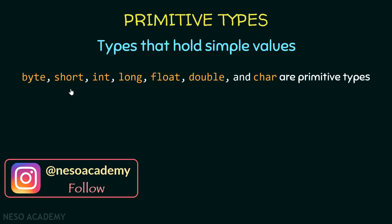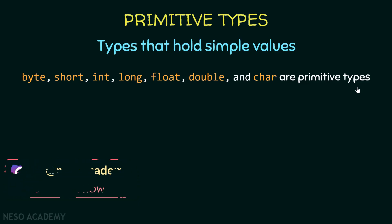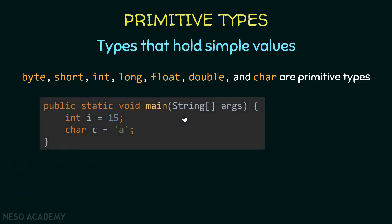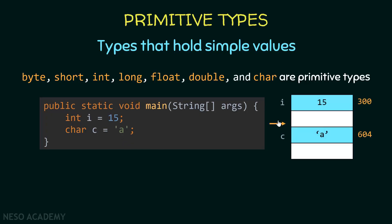For example, byte, short, int, long, float, double, and char are primitive types because they contain simple values. What's special about primitive types? Here I'm defining a variable called i, it is an integer equal to 15, and also a character called c which is equal to the character 'a'. If we imagine how these variables are stored in memory, we have a box called i with value 15, and another box called c with value 'a'. Each box has an address — for example, the address for i is 300 and for c is 604. The variable contains the value directly.